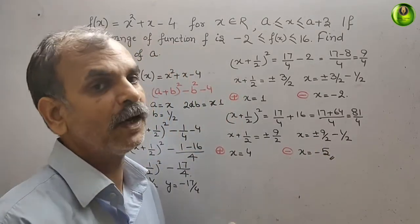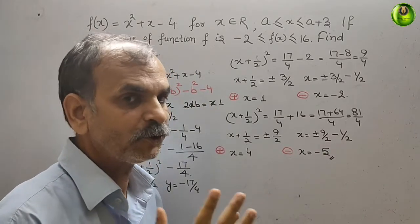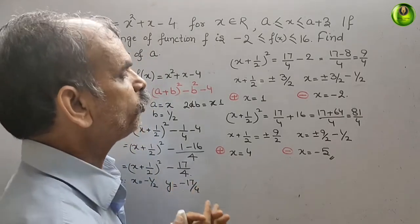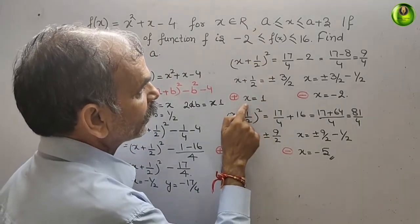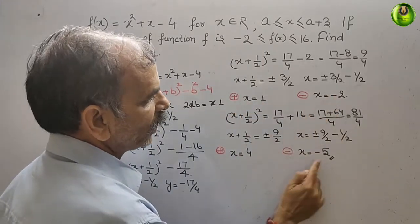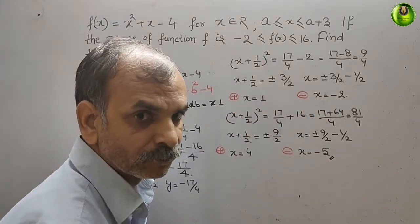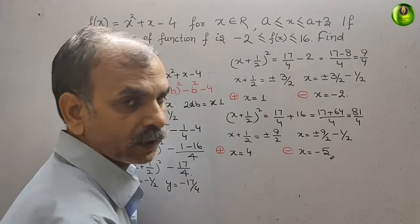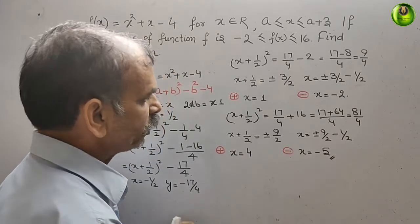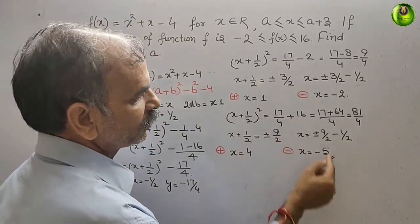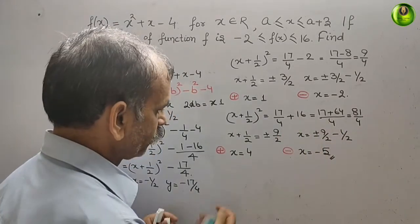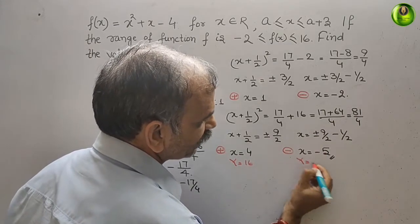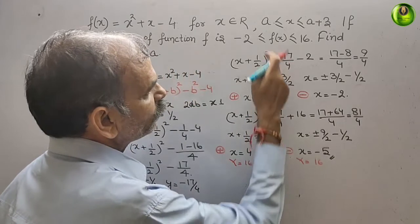We now have x values: 1, -2, 4, and -5. The y-value is 16 at x = 4 and x = -5, and y = -2 at x = 1 and x = -2.